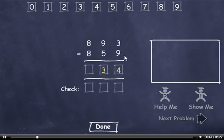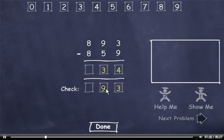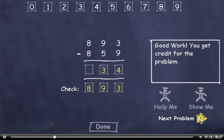Now let's check it. 9 plus 4 is 13, so I'll drag down a 3, carry the 1, add it to 5 to get 6, plus 3 is 9. Then 8 plus 0 is 8. This number matches the minuend, so I'll click the Done button and click the Next Problem button.